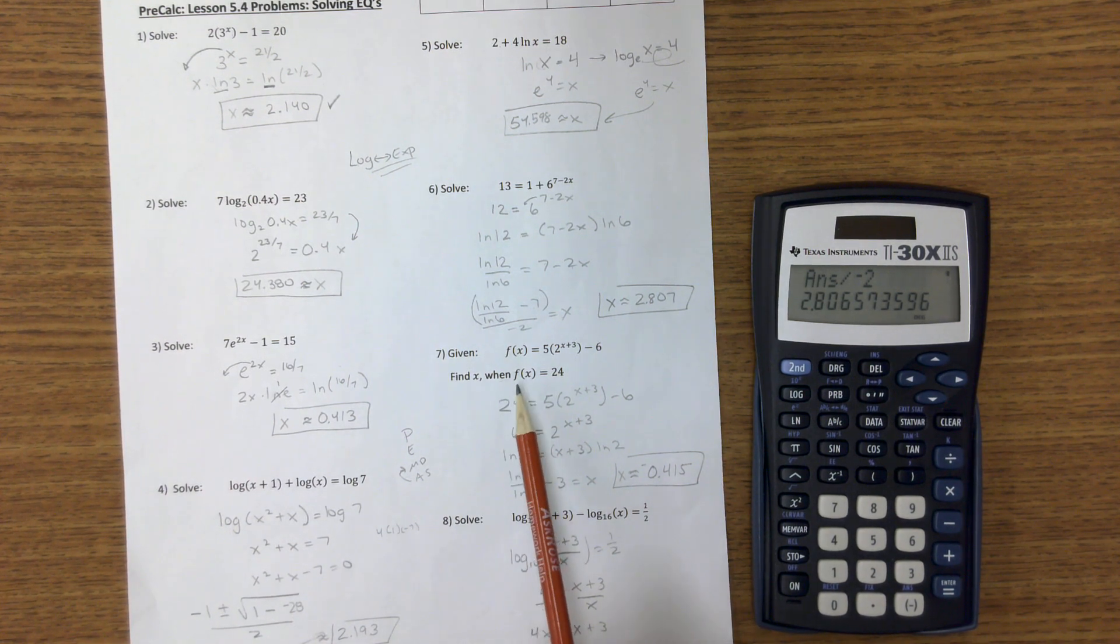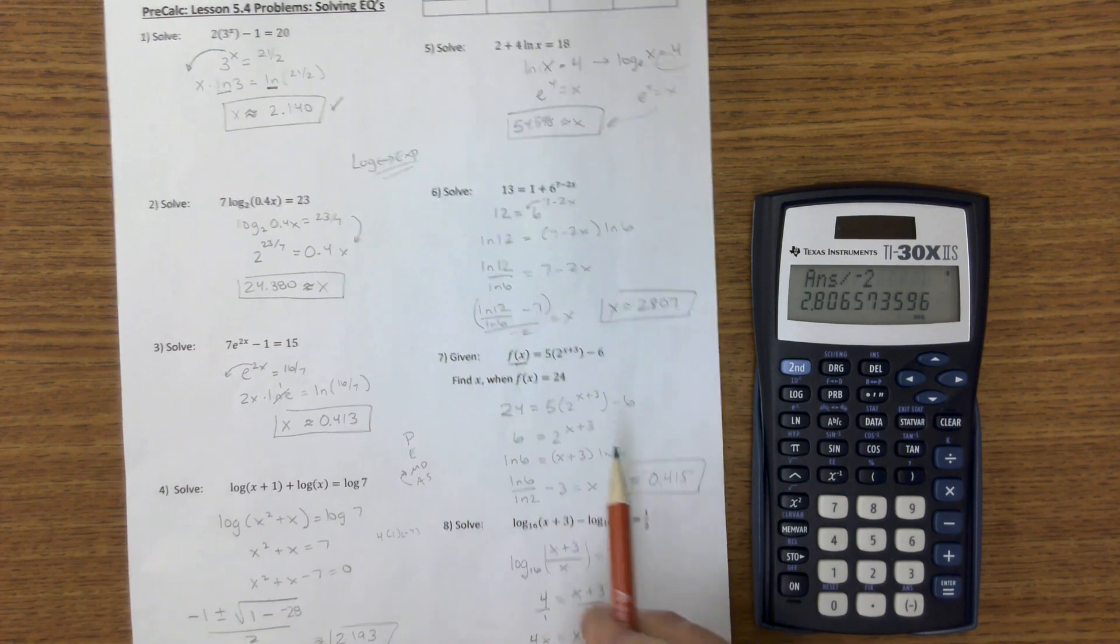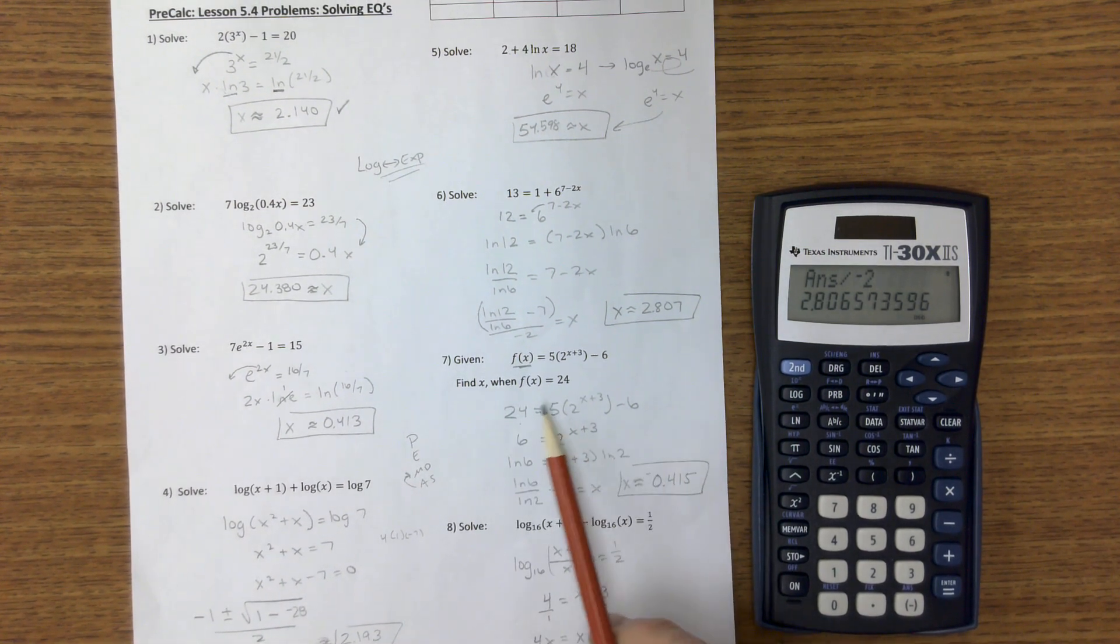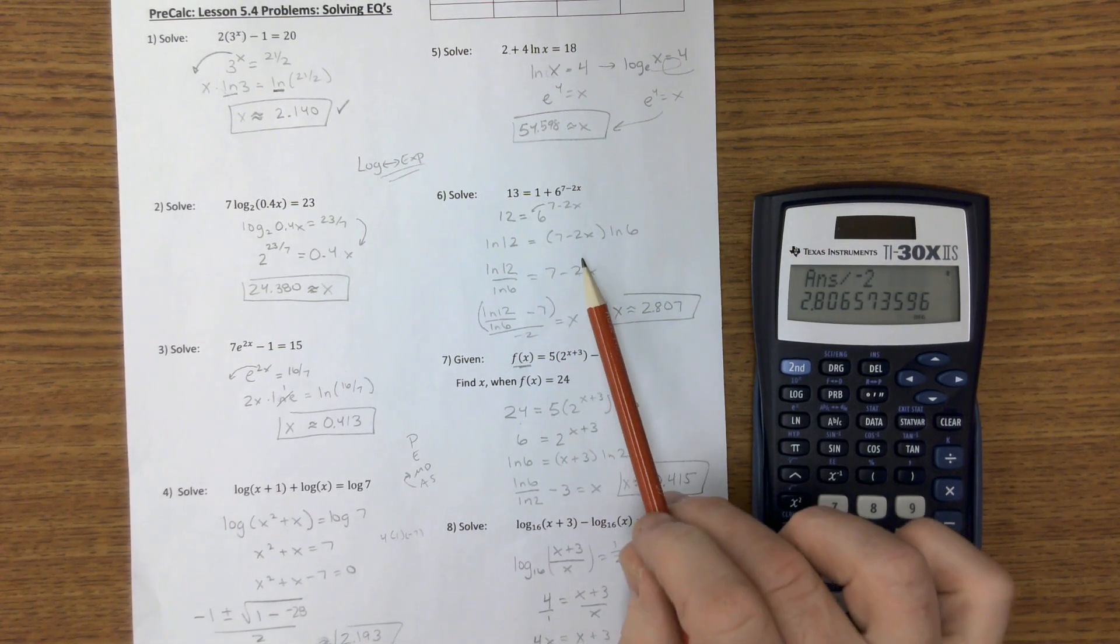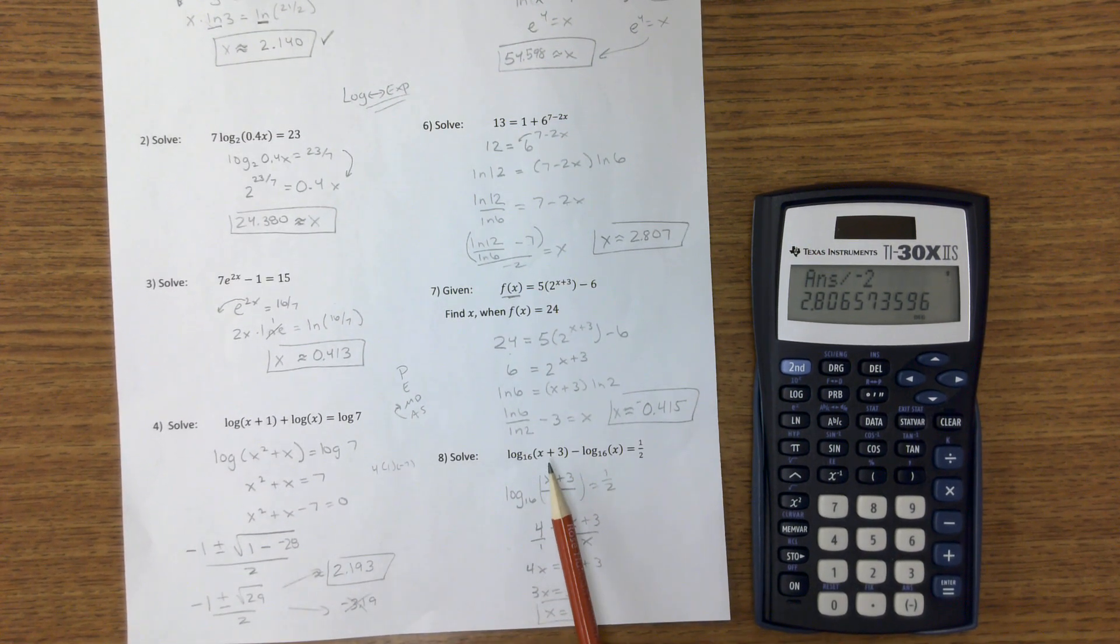Number 7, it says find x when f of x is 24. Well, f of x is right there, so 24 goes there. Do all your work in reverse, very similar to this one, and find the value.